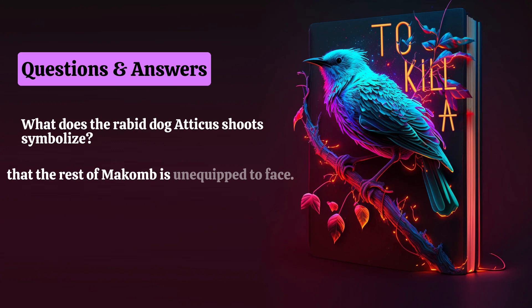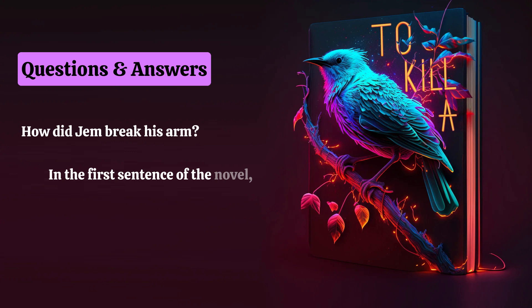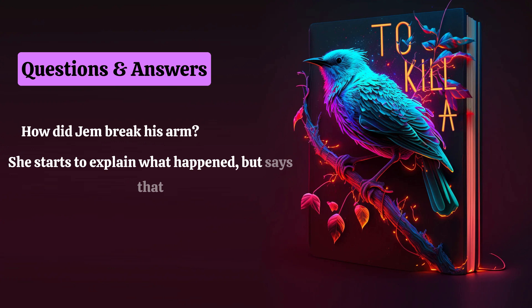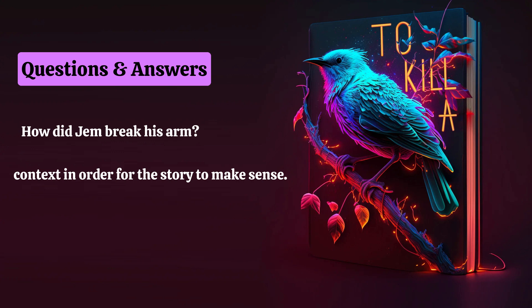How did Jem break his arm? In the first sentence of the novel, Scout says that Jem broke his arm. She starts to explain what happened but says that she needs to go back and provide the necessary context in order for the story to make sense. The rest of the novel is the background context for Jem's broken arm.